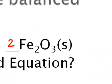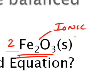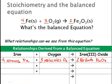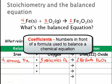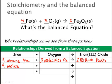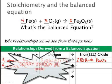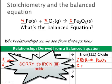Remember, Fe2O3 is a formula unit because it's an ionic compound. We can also derive that the coefficients tell us the number of moles: 4 moles of iron react with 3 moles of oxygen, and that will produce 2 moles of iron(III) oxide.